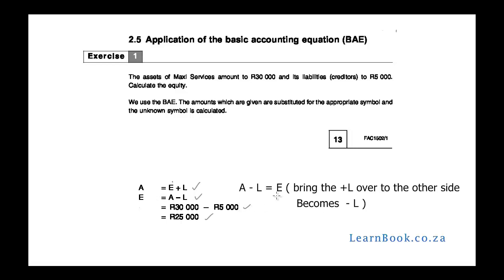If we work it out, the basic accounting equation should look like: $30,000 equals $25,000 plus $5,000 of liabilities. So that is assets, owner's equity, and liabilities.